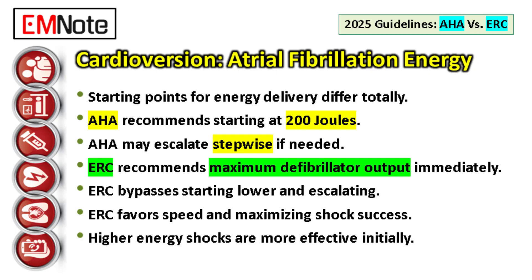The ERC, however, recommends an initial synchronized shock at the maximum defibrillator output — right away, completely bypassing a lower starting point. It favors speed and first-shock success. If you practice under ERC guidelines, you must check your specific device's maximum output — could be 360 joules or something else depending on the model — and select that right off the bat, eliminating the potential delay of starting low, failing, going higher, and failing again.